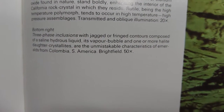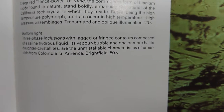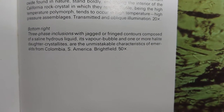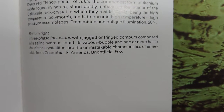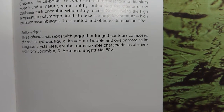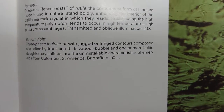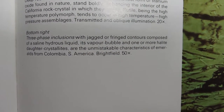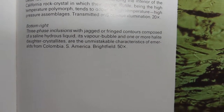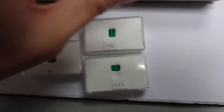It says here: three-phase inclusions with jagged or fringe contours composed of saline hydrous liquid — a vapour bubble or one or more halide daughter crystallite. Halide is actually salt. They are an unmistakable characteristic of emeralds from Colombia. I actually saw some of these here in this stone.